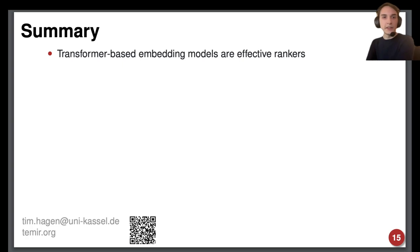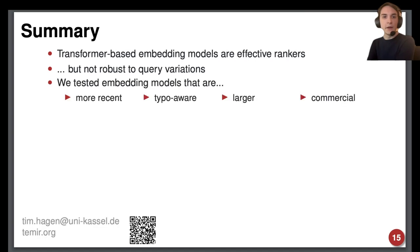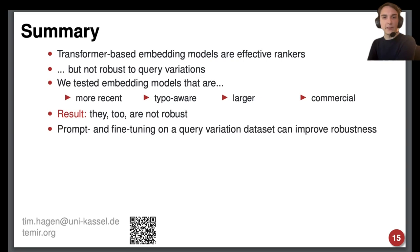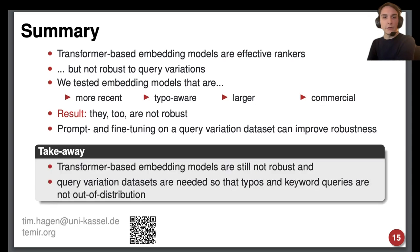In summary, we noted that transformer-based embedding models make effective rankers, but are not robust to naturally occurring query variations. We tested more recent models than previous work, as well as a model specifically designed to be robust to typos, large language models and a commercial embedding model. But we ultimately found that they still are not robust. We could further improve robustness, but not effectiveness, by fine-tuning and prompt-tuning, and conclude that, to create more robust models, we need more query variation datasets that ensure semantic identity on more categories than just misspelling.